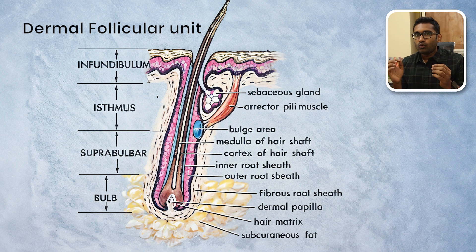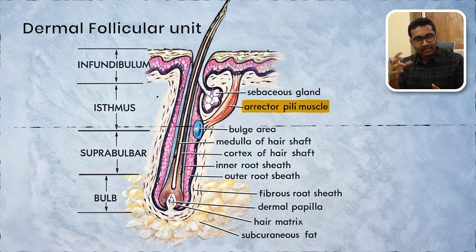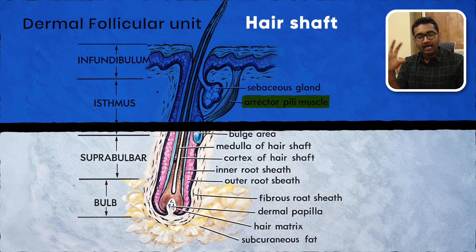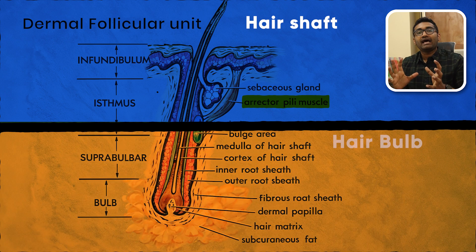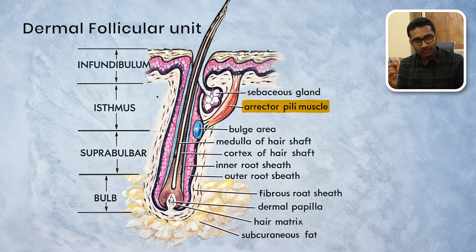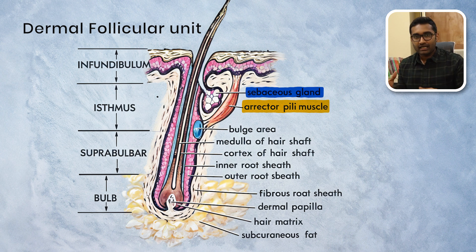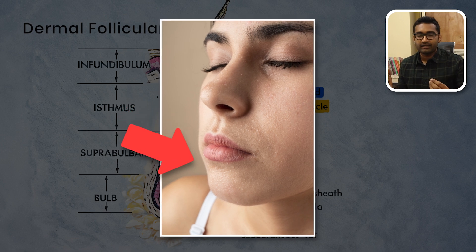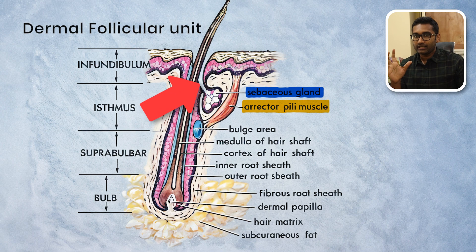In this dermal follicular unit, there is a muscle attached to the hair shaft called the erector pili. This muscle has two parts: the muscle attachment and the hair shaft. It also includes the hair bulb. Inside the dermal follicular unit is the sebaceous gland, which is a gland in our skin.